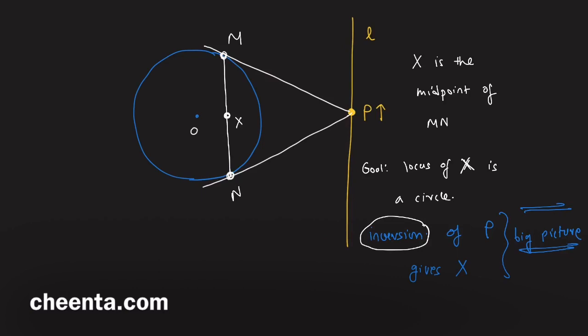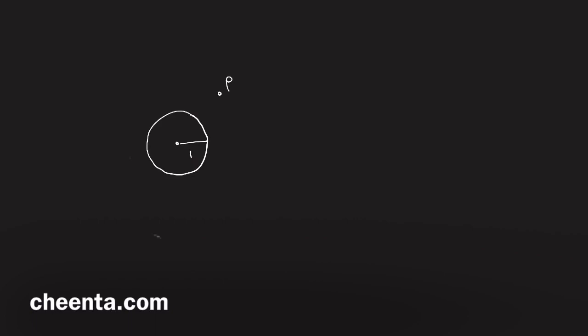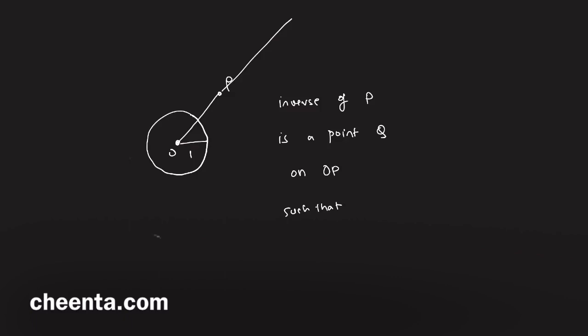Here is a quick recap. Suppose we have a circle with radius 1 and a point P outside this circle. The inverse of P is a point Q on the ray OP such that OP times OQ equals 1, so Q will be somewhere inside the circle.